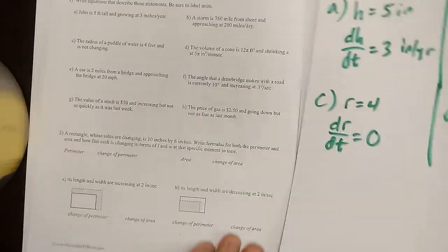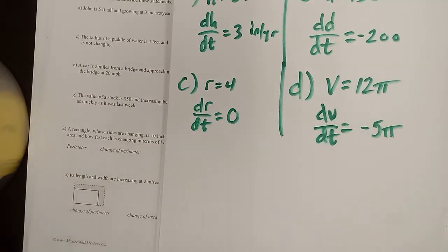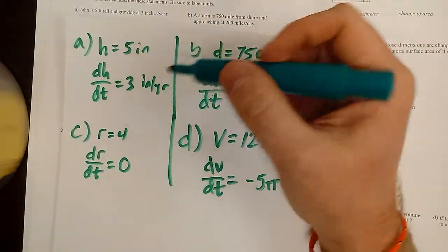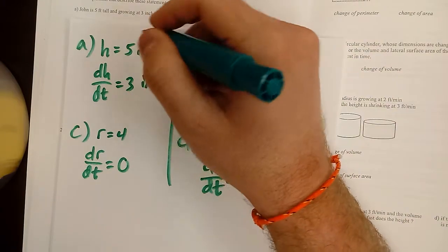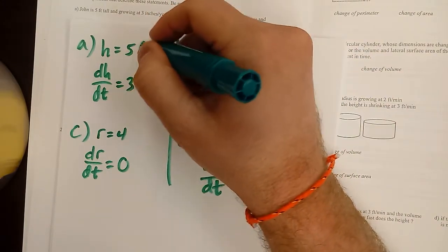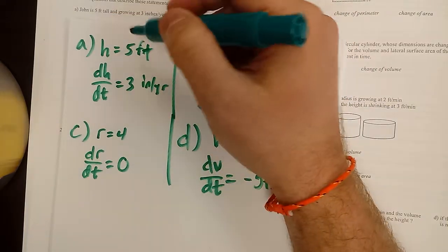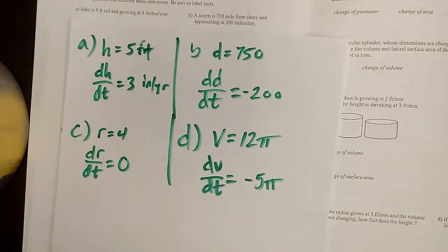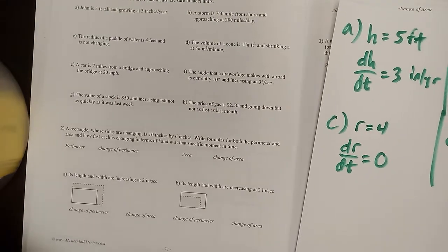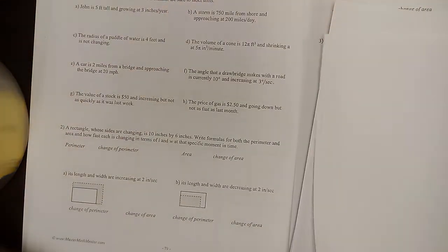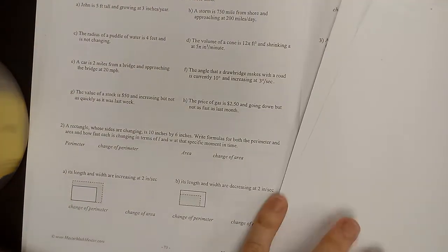I looked at the rest of them — I don't really see value in spending time talking about those. I do want to address something I said in part A though: John is five feet tall — I wrote five inches. If I wanted to say that in feet, it would be five feet tall and then three inches per year. Usually they're going to give us the same unit. These are all just trying to get us into the frame of mind that we can talk about change as d-something/dT, and what something actually is as a regular letter.